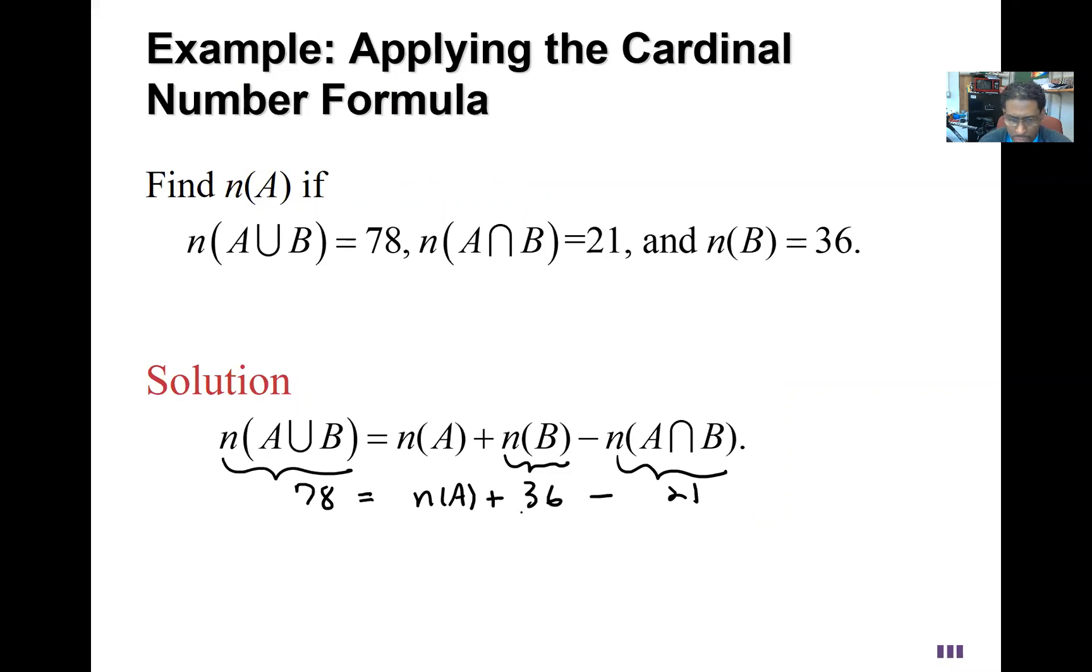So it's just math, algebra, solving an equation. All right, so 36 minus 21 is 15, and all you got to do is take away that 15 from the 78. That'll tell you how many are in A.